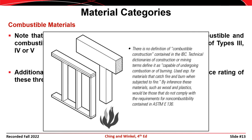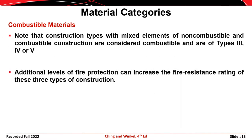Combustible materials, on the other hand, are basically any materials that don't meet the definition of a non-combustible material — most often this is wood. Structures that are constructed from both combustible and non-combustible materials are categorized as Types 3, 4, or 5. Active and passive fire protection strategies are used to increase the fire resistance rating of these types of construction.